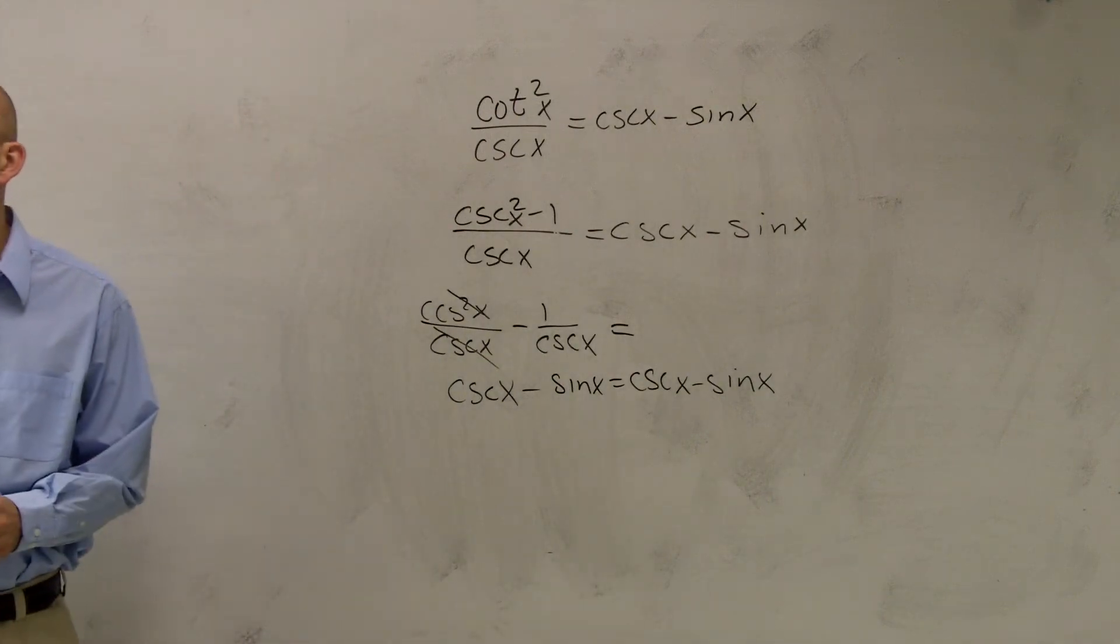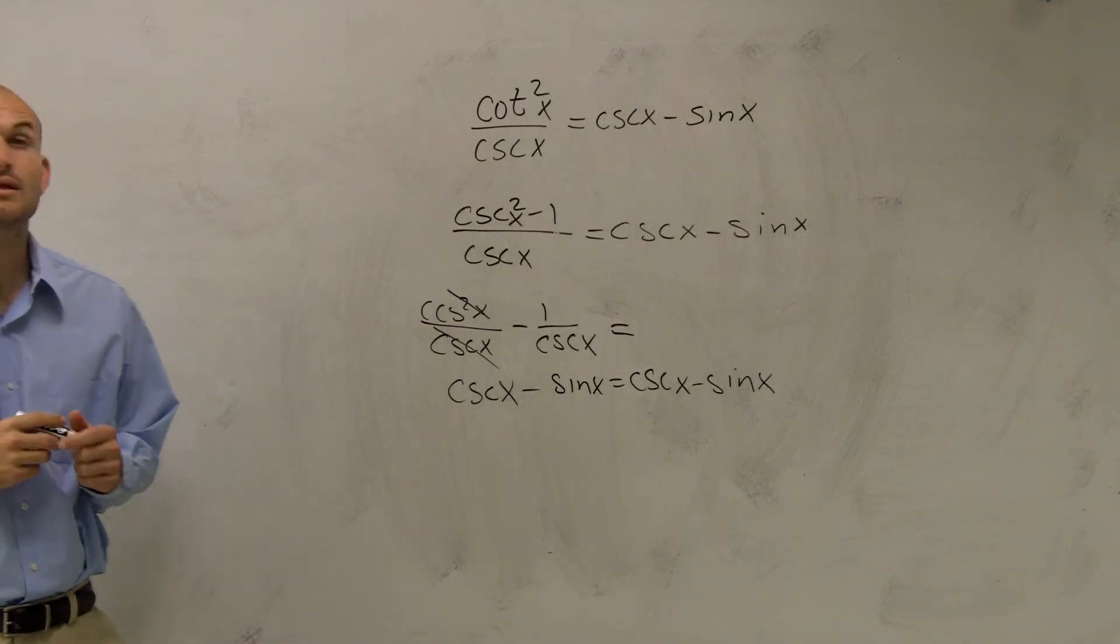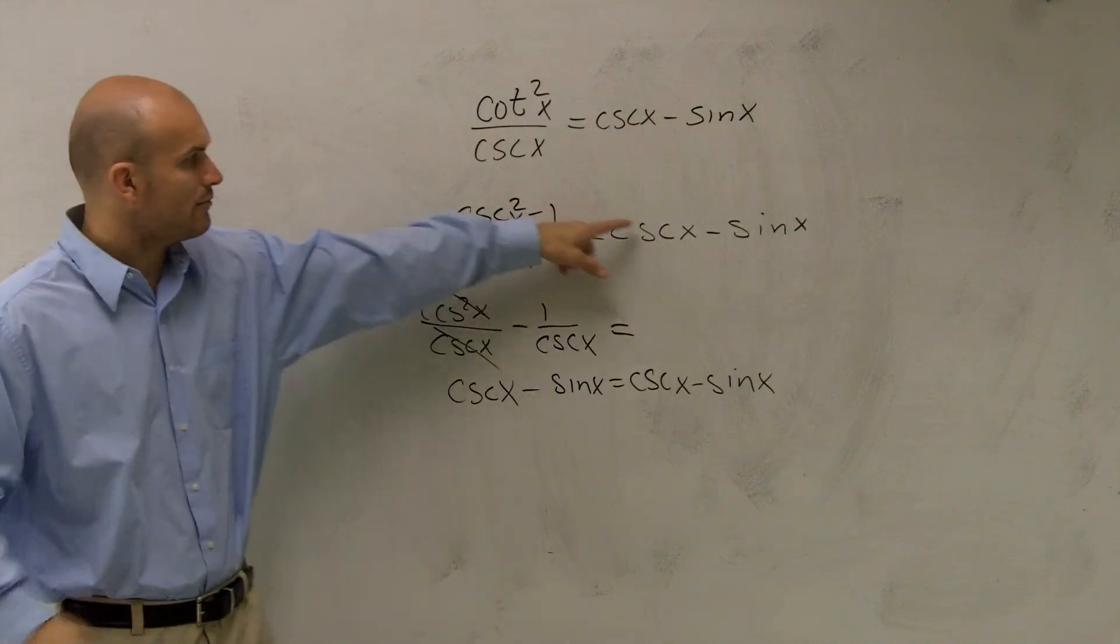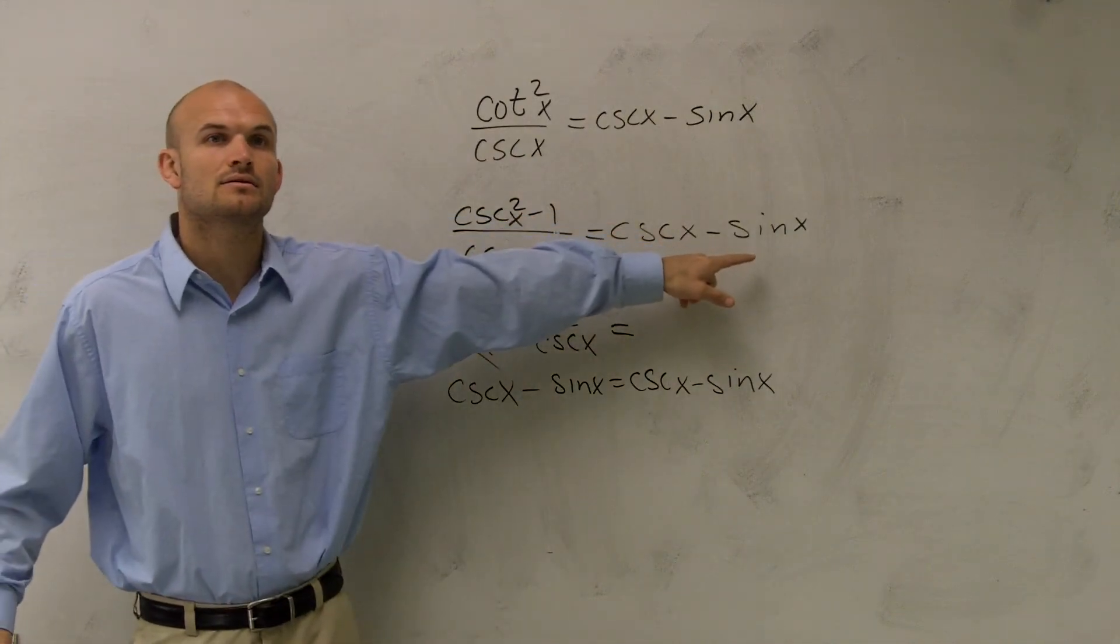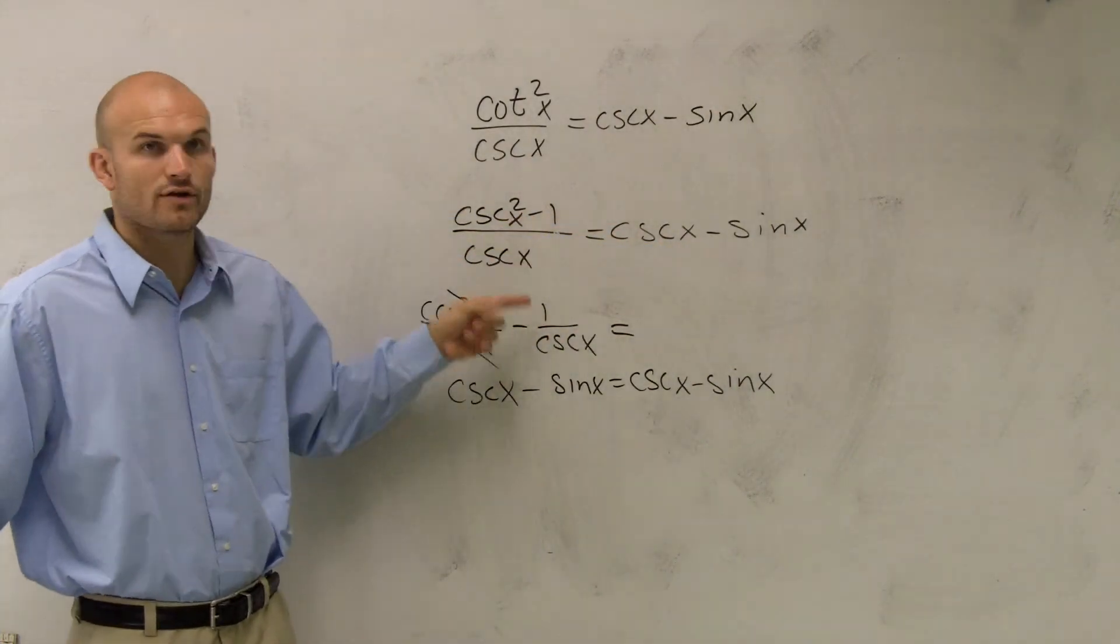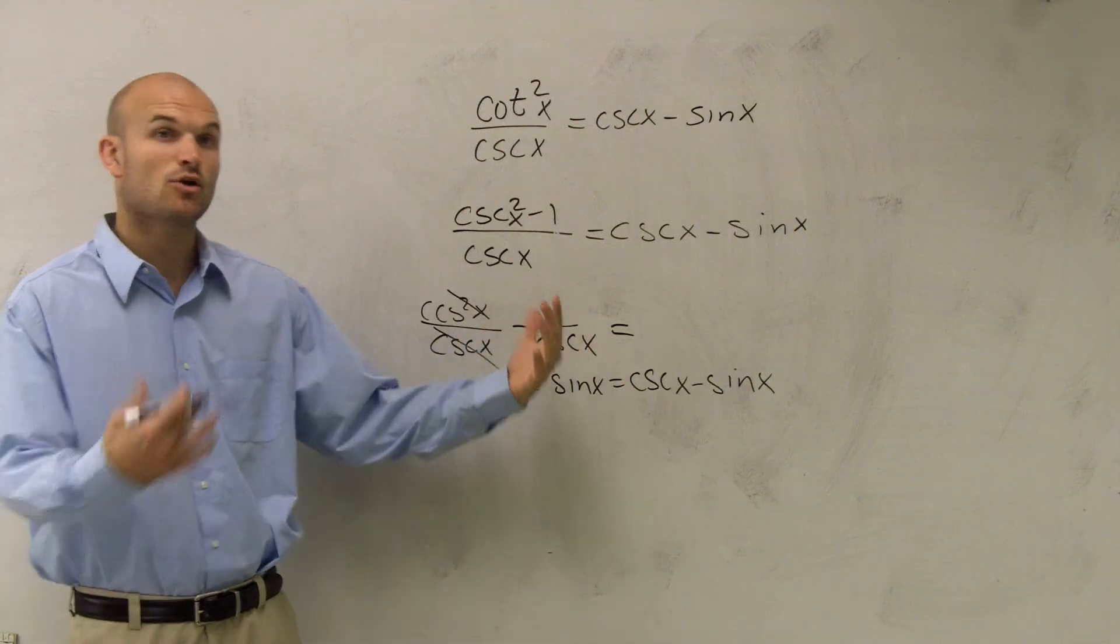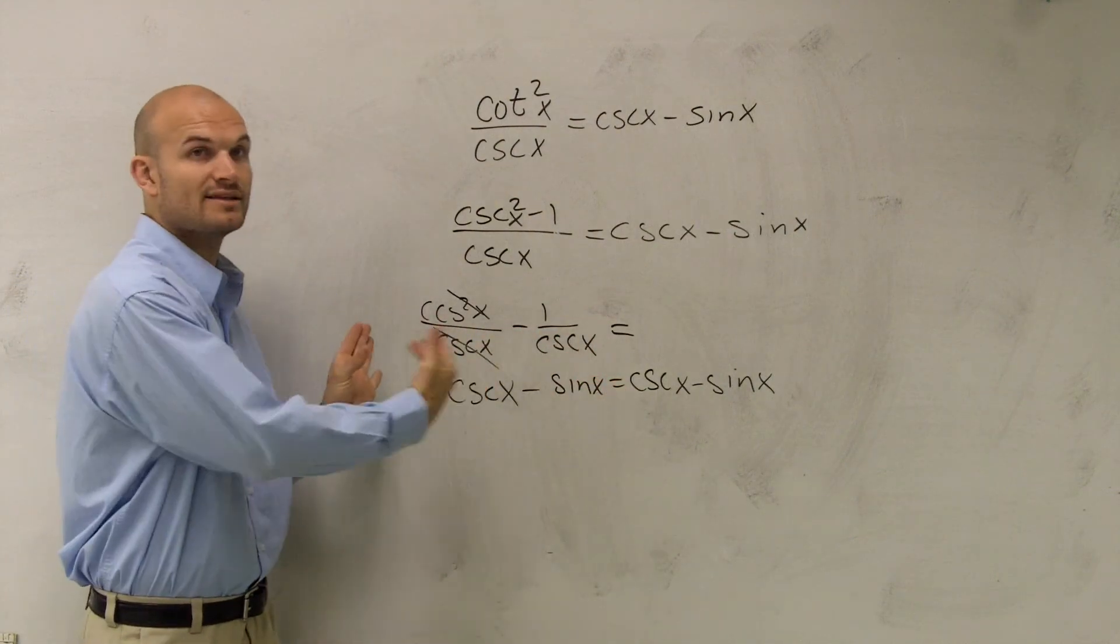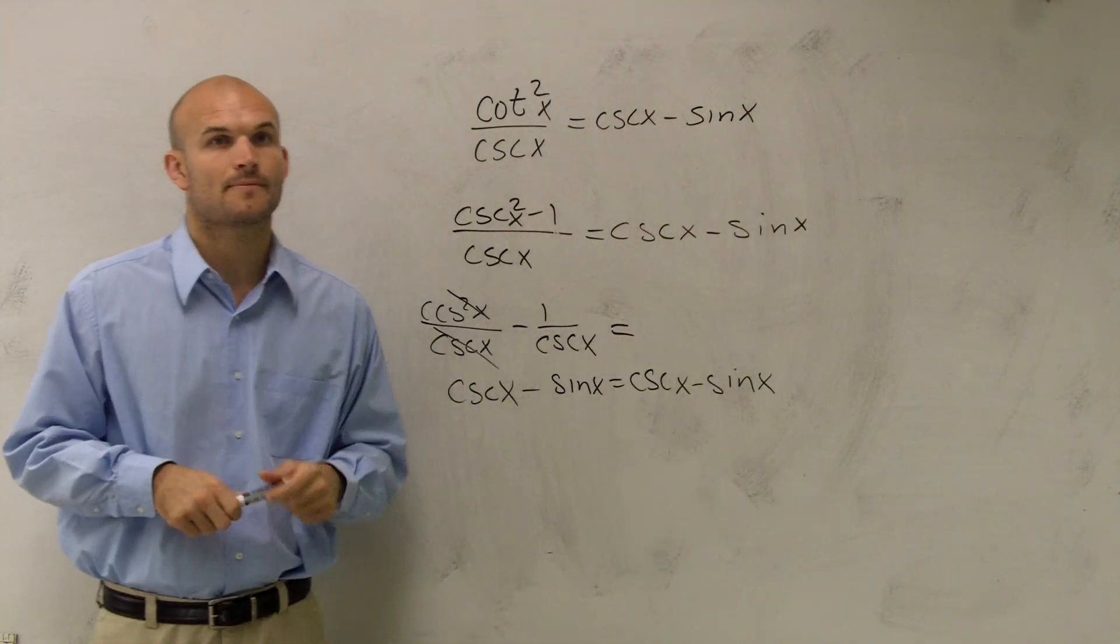You guys see it? When did you do the reciprocal? Because, remember, I wanted it to be sine. So that's why I took 1 over cosecant to get it to sine. Because, remember, we're trying to verify the identity. We're trying to verify the left side is going to equal our right side. Okay.